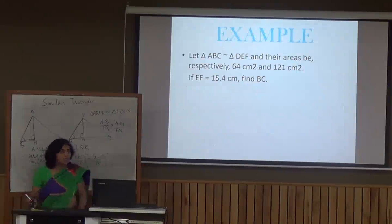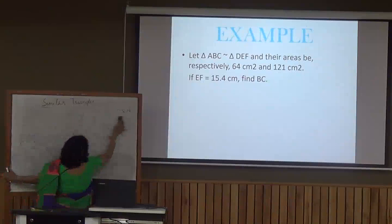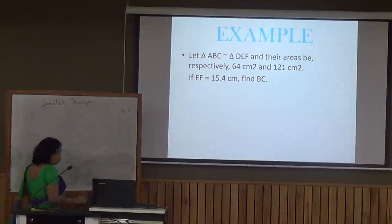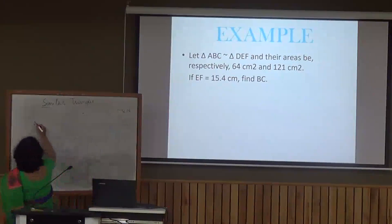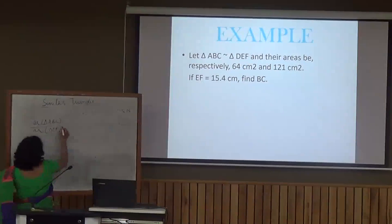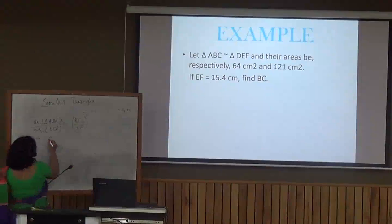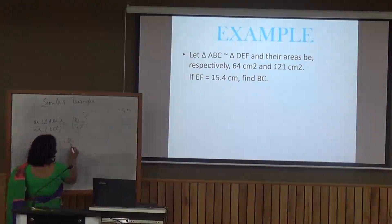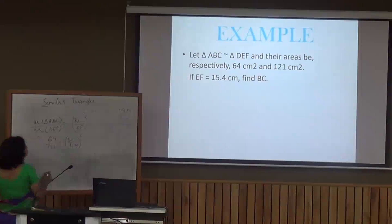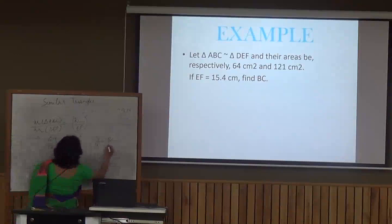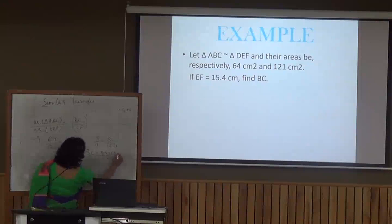Let's take an example. Triangles ABC and DEF are given similar with areas 64 cm² and 121 cm² respectively. EF is given as 15.4 cm and we have to find BC. By the theorem: Area(ABC)/Area(DEF) = (BC/EF)². So 64/121 = (BC/15.4)². Taking square roots on both sides: 8/11 = BC/15.4, giving BC = (8 × 15.4)/11 = 11.2 cm.